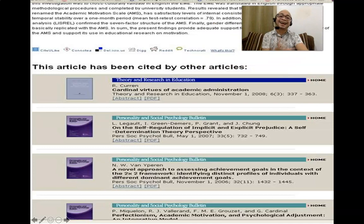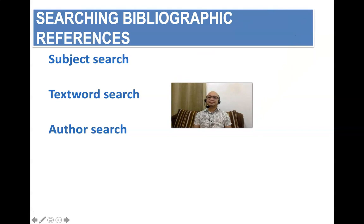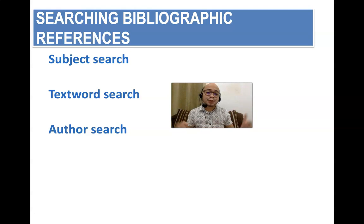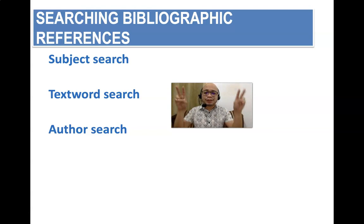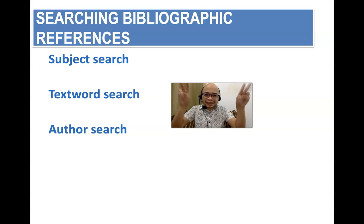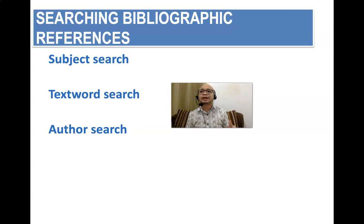How would you make a systematic bibliographic search? There are several techniques. Personally I'm using the subject search. However, in some cases the subject search may be too broad, so you might want to use the text word. If you really want to be specific with what you're searching, you might as well place a quotation mark in your search engine — it will filter out literature that are not within the quotation mark. Or you can do an author search, because some authors have already been established as researchers on a particular topic, and you might want to search the previous work of those particular authors.